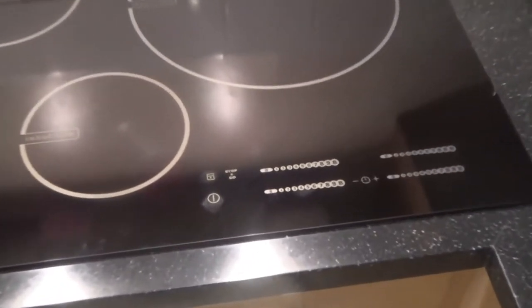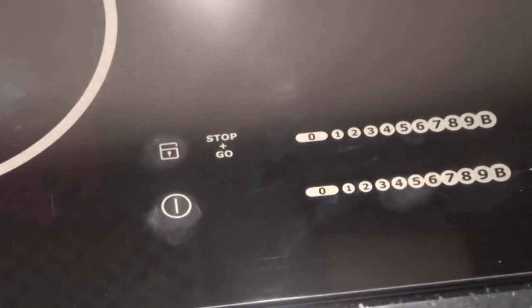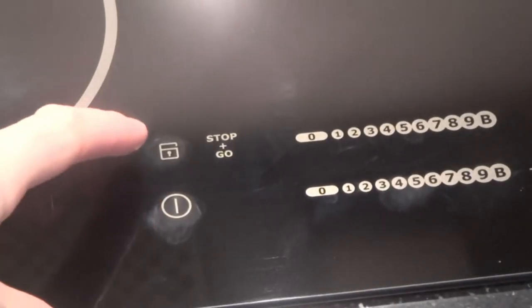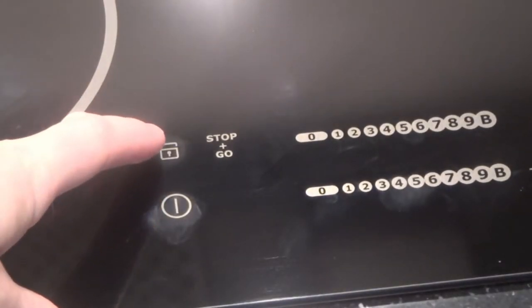So let's zoom in on the control panel down here. As you can see, we've got the on and off button, and we've also got a little padlock here. So this is how you lock it.